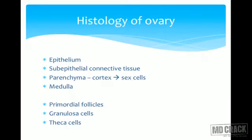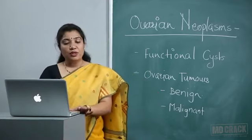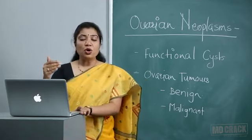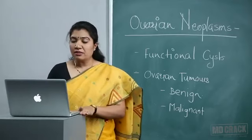Let's look at ovarian histology before discussing tumor types. The ovary has surface epithelium, then sub-epithelial connective tissue, then parenchyma — cortex with sex cells — and medulla with the main vascularity. It has primordial follicles containing granulosa cells and theca cells. The epithelium is similar to the mesoepithelium of the peritoneum, so all these cell types can form tumors.